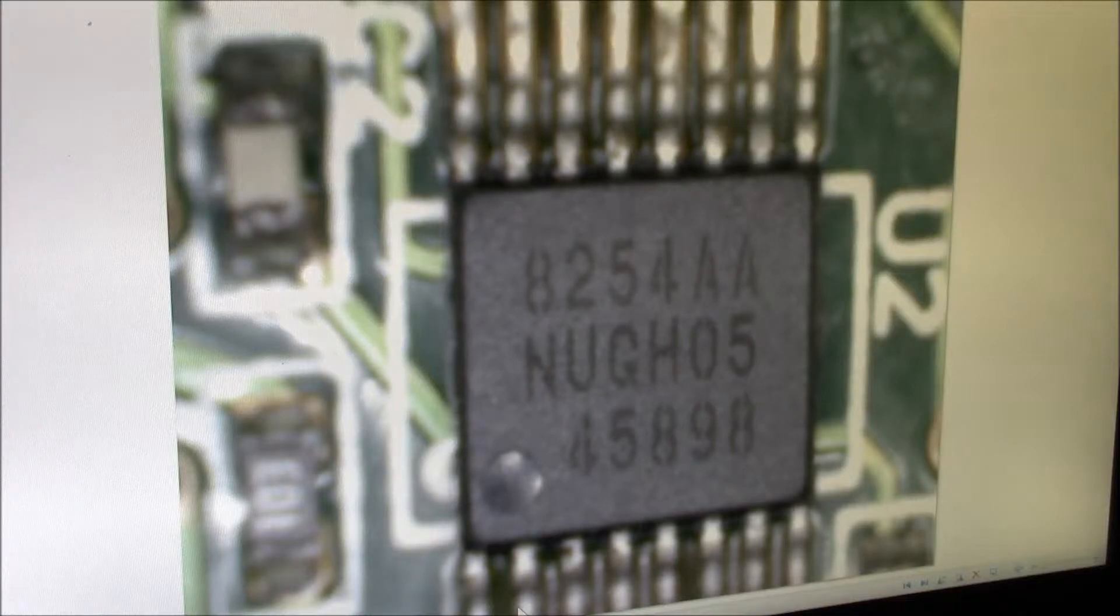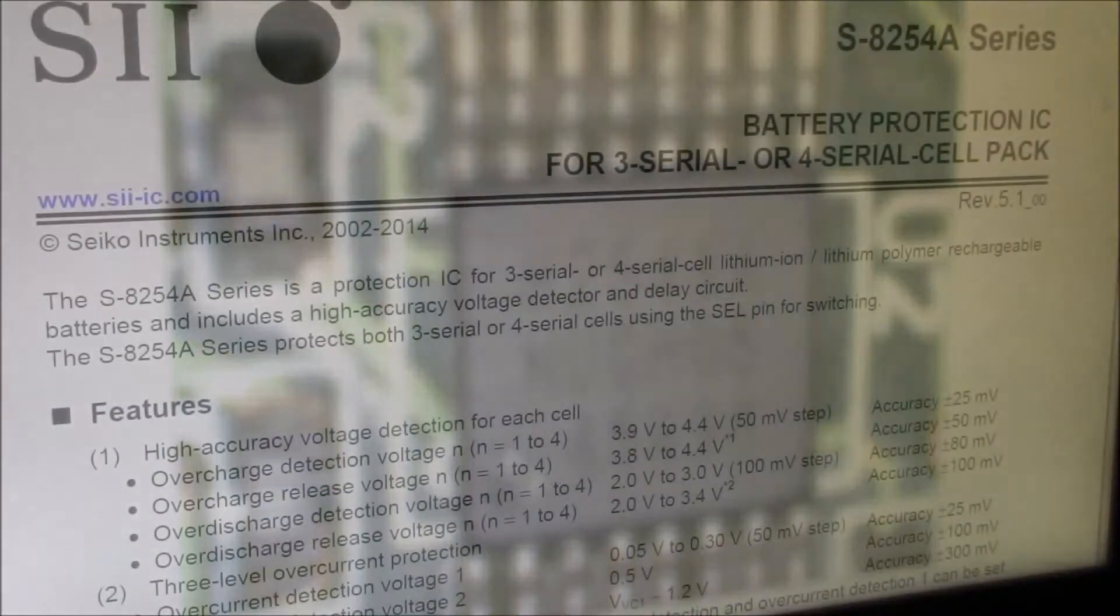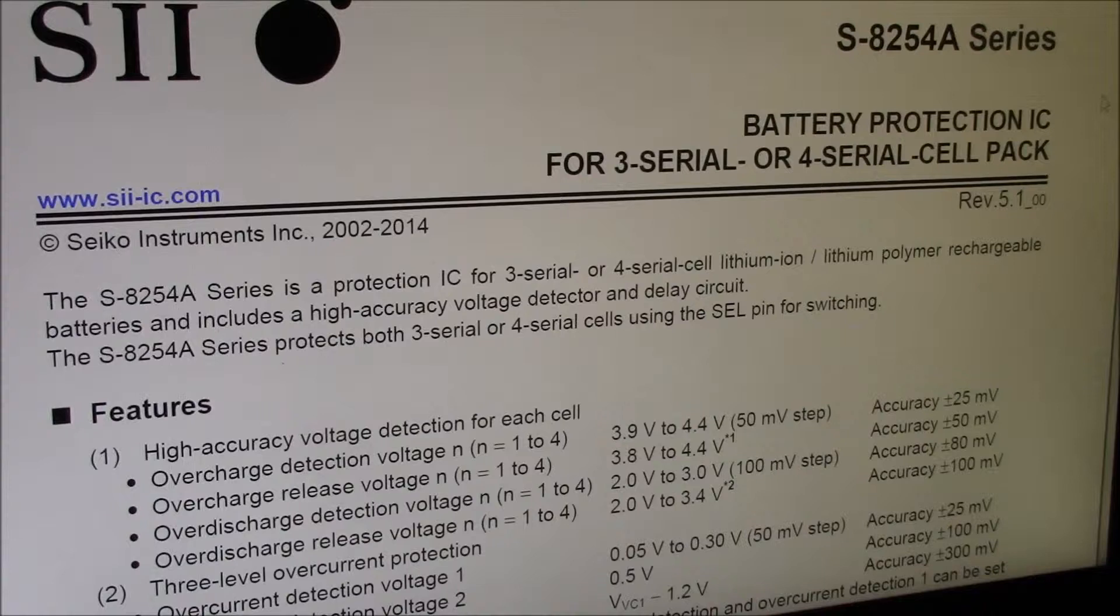This is the main IC on these earlier boards. Looks like a part number 8254AA. That's likely a Seiko Instruments S8254A battery protection IC for three or four serial cell packs. Again I'll put a link to this web page or PDF file in the video description.